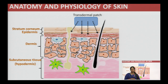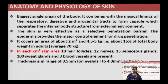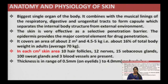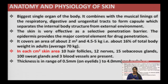Now we come to the anatomy and physiology part. Our skin is mainly divided into three parts: epidermis, dermis, and hypodermis. If we look at the anatomy and physiology of skin, it is the biggest single organ of our body. It interfaces with other mucosal linings like respiratory, digestive, and urogenital tract, working at the boundary between the internal body structure and external environment.